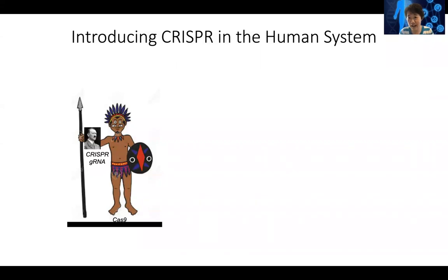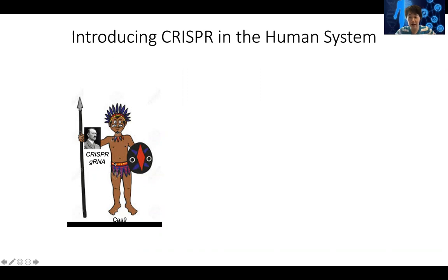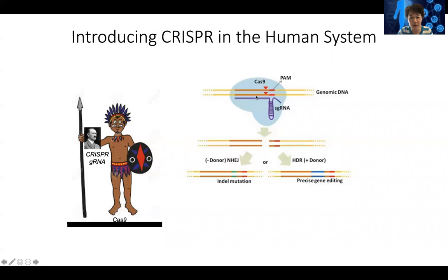Scientists, especially pioneers such as Feng Zhang's lab at the Broad Institute, thought this was a great idea to bring into the human system for genome engineering. All you need is the Cas9 protein and a guide RNA — the CRISPR photo. You can target anywhere in the genome: as long as there is a PAM NGG sequence, you design a 20-nucleotide sequence before it as a perfect match, bring Cas9 to that location, and Cas9 will make a double-stranded cut.